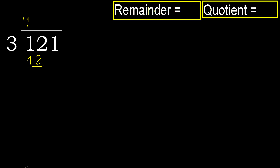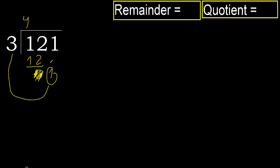Ok. 12 minus 12 is 0. Next, eliminate 0 on this side — bring down 1. But 1 is less, therefore next. There is no number, therefore finish it — therefore complete.